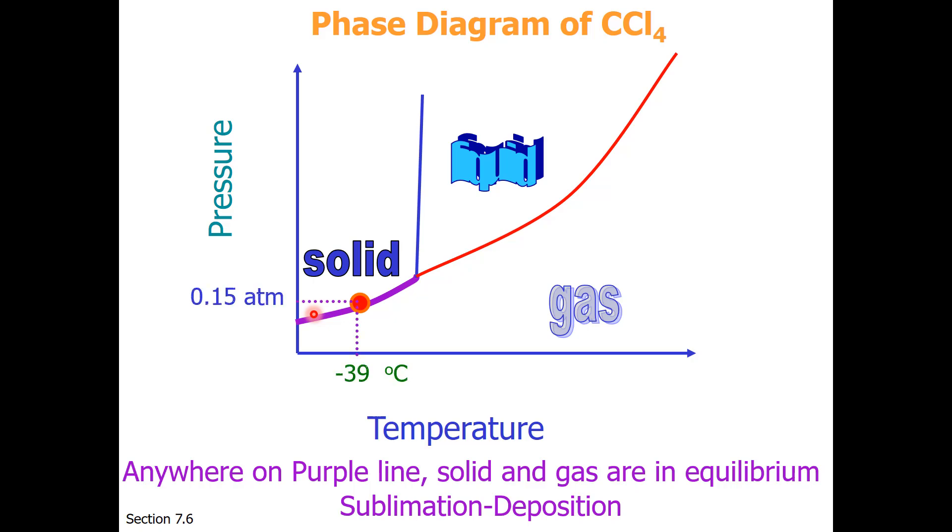So for carbon tetrachloride, we need to get down to 0.15 atm and minus 39 degrees Celsius in order to see sublimation. While it would be difficult to find conditions outside where carbon tetrachloride would sublime, dry ice, which is solid carbon dioxide, does so very readily at one atmosphere and room temperature. Let's take a quick peek at a video.